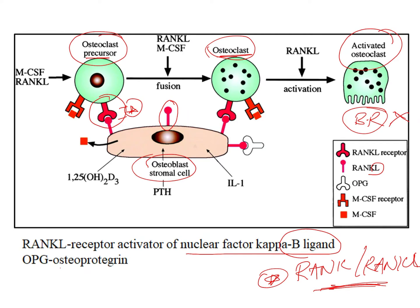There is another molecule known as OPG — osteoprotegerin — which is a decoy molecule. It has a structural similarity to the RANK receptor, so it can also bind with RANK-L, the ligand of the osteoblast. If the amount of OPG increases, more OPG will bind with RANK-L than RANK itself, reducing the interaction between RANK and RANK-L. So OPG competitively inhibits RANK from binding onto RANK-L.